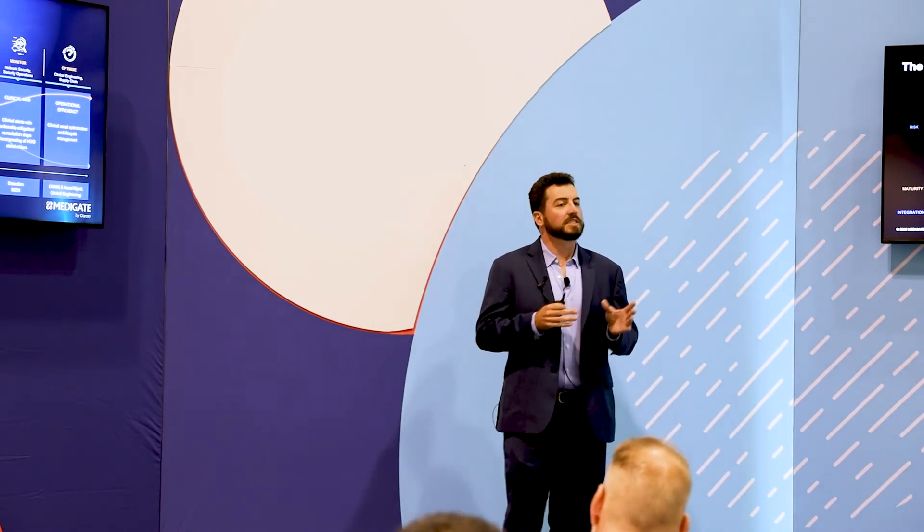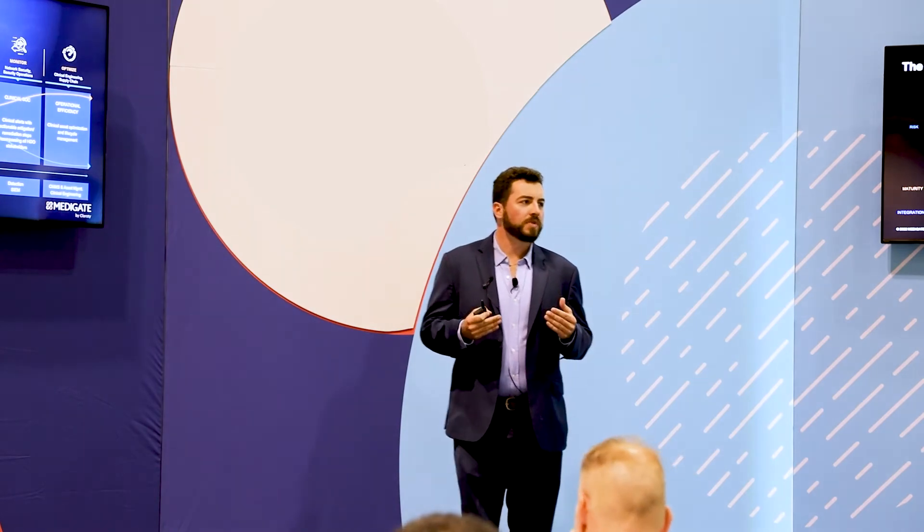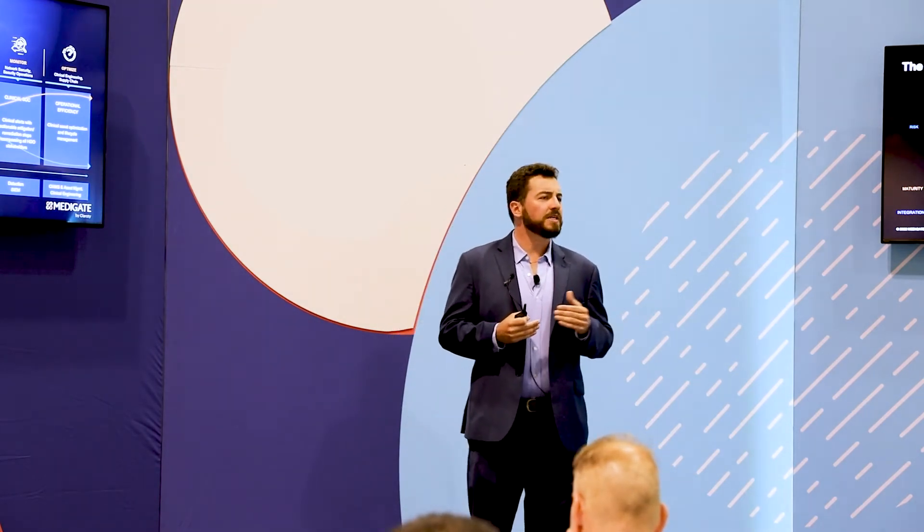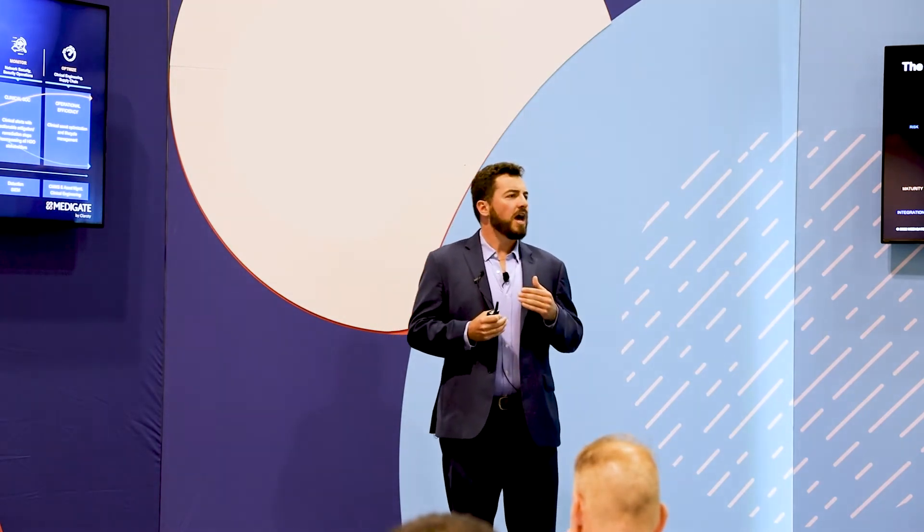That then brings us into the assess portion, where we build a risk score. Knowing the vulnerabilities, insights, and how the device is handling protected information, we can score it — this is a critical risk device, this is a high risk device. We now have a starting point, a baseline, so that when we have an overall risk score for our organization, we have a goal and a target over time that we can achieve.